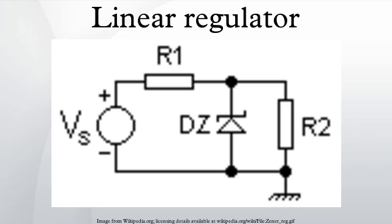Once R1 has been calculated, removing R2 will allow the full load current through the diode and may exceed the diode's maximum current rating, thereby damaging it. The regulation of this circuit is also not very good because the Zener current will vary depending on — and inversely depending on — the load current. In some designs, the Zener diode may be replaced with another similarly functioning device, especially in an ultra-low voltage scenario, like several normal diodes or LEDs in series.